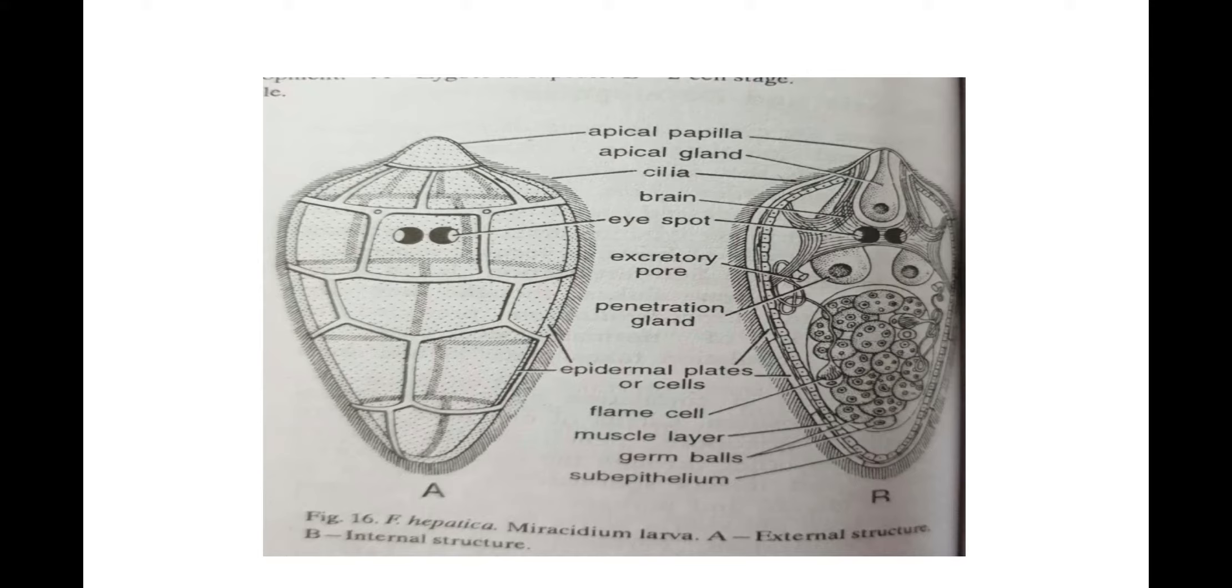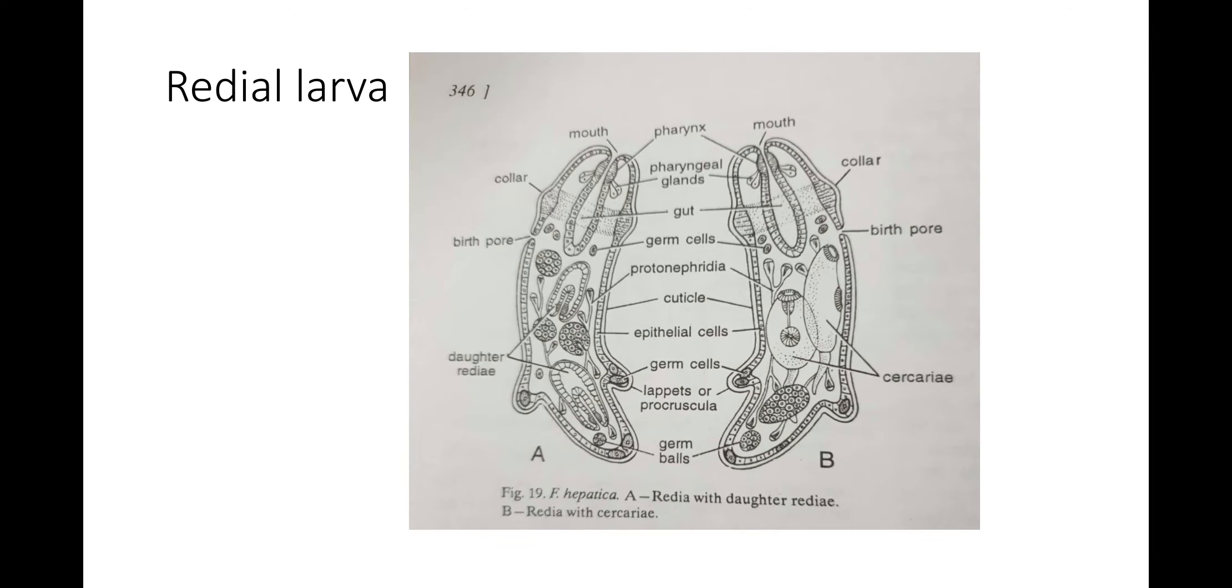Protonephridium of each divides into two flame cells, which open outside by a common excretory pore. In addition, the sporocyst contains germ balls. Sporocysts move about in the tissue of host, absorbing nutrition from it. Its germ balls develop into the next larval generation, the radiae. Each sporocyst produces 5-8 radiae. Radiae emerge from the sporocyst by rupture of its body wall.